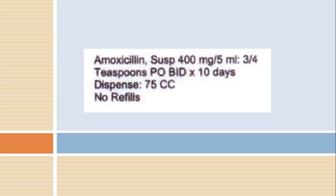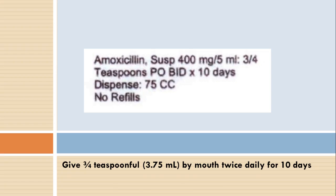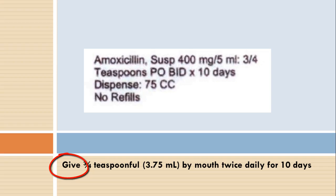In this case, it says amoxicillin suspension — that's an antibiotic — 400 milligrams per five mils. We'll learn later that means 400 milligrams per teaspoon. It says three quarters of a teaspoon by mouth BID for 10 days. That is: take three quarters of a teaspoon by mouth twice daily for 10 days. I also converted it to milliliters on the slide, which I always think is a good idea. Notice the verb — I used 'give' and not 'take,' because this is probably a child. I can't tell little Timmy who's three years old to just take it — a parent is giving it. So on the directions, we say 'give three quarters of a teaspoon.'